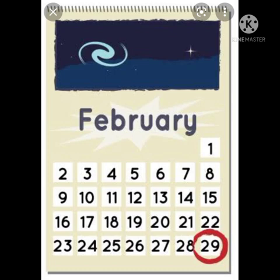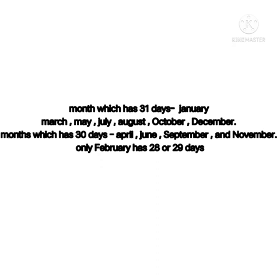Now let us understand months and their number of days. A year has 12 months; a month has 30 or 31 days, and only February has 28 days, or 29 days in a leap year. The months which have 31 days are January, March, May, July, August, October, and December. The months which have 30 days are April, June, September, and November.